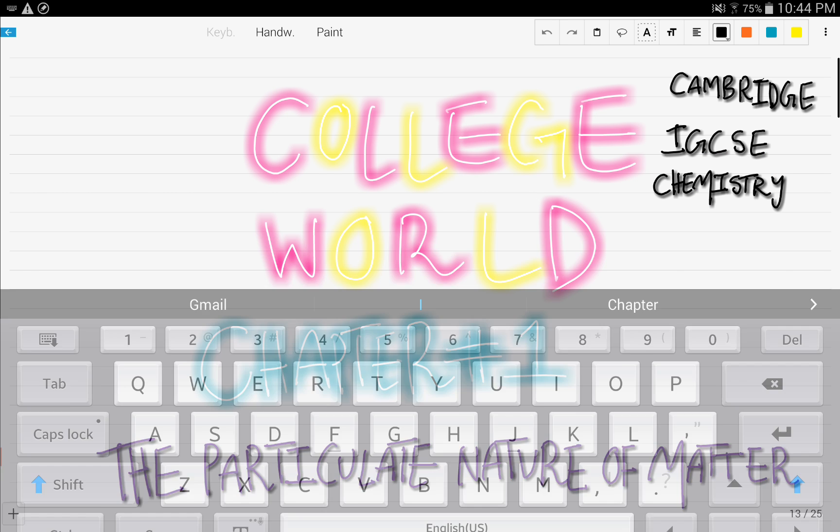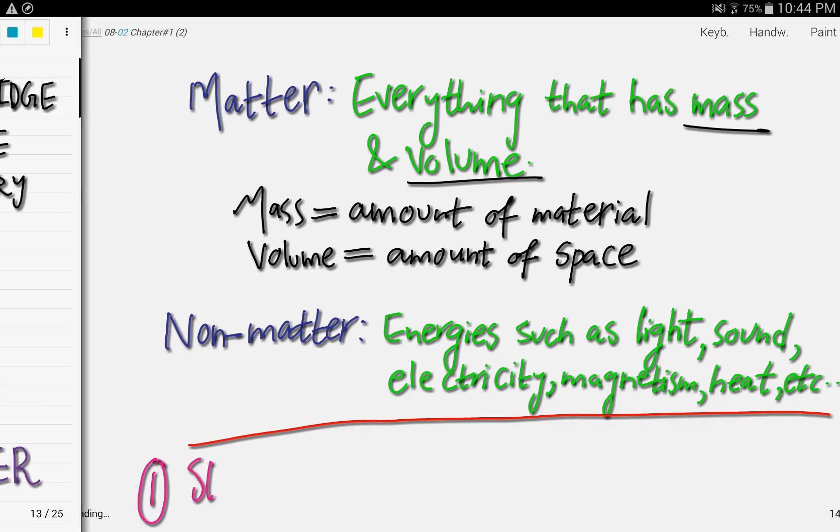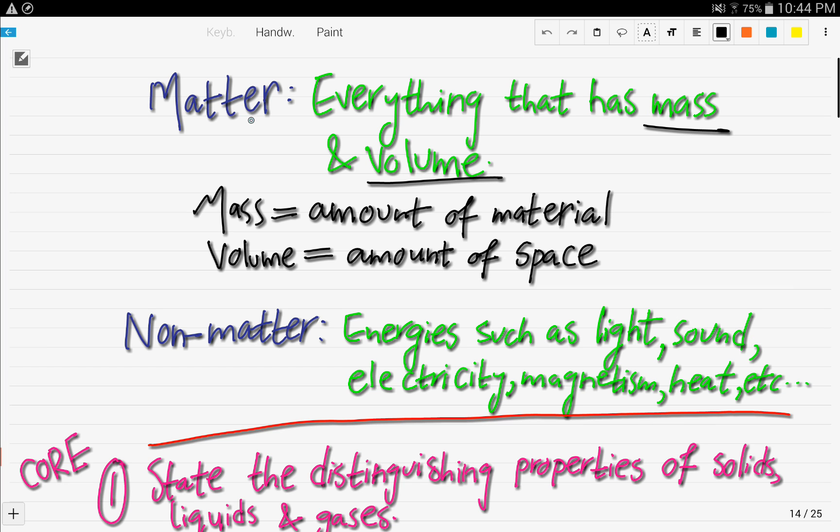First, let's start off by explaining what is meant by matter. Matter is everything that has mass and volume. Mass is the amount of material, volume is the amount of space. So you would ask, what is non-matter then? Non-matter is energy such as light, sound, electricity, magnetism, and heat. I mean, you cannot define mass or volume for sound or light, for instance. Let's get started with the objectives.